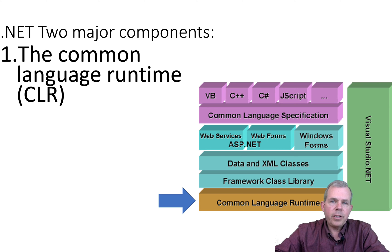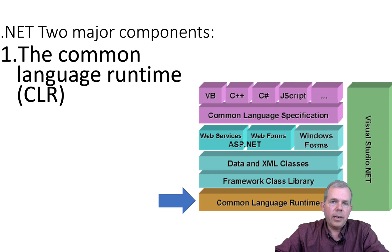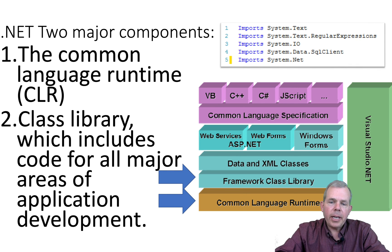Almost every time, though, when people think of .NET, they use C#. That's the primary language that .NET developers focus on. A second part of the framework is the library — the class library.